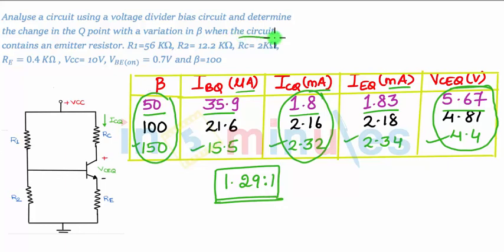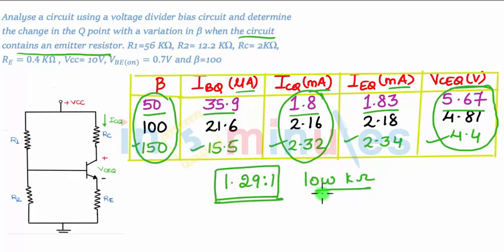It is also mentioned that when the circuit contains an emitter resistor, the voltage divider circuit with R1 and R2 can bias the transistor in the active region using resistor values in the low kilo-ohm range. The resistance values required for bias here are low kilo-ohms, whereas in fixed bias you require very large values of biasing resistor.